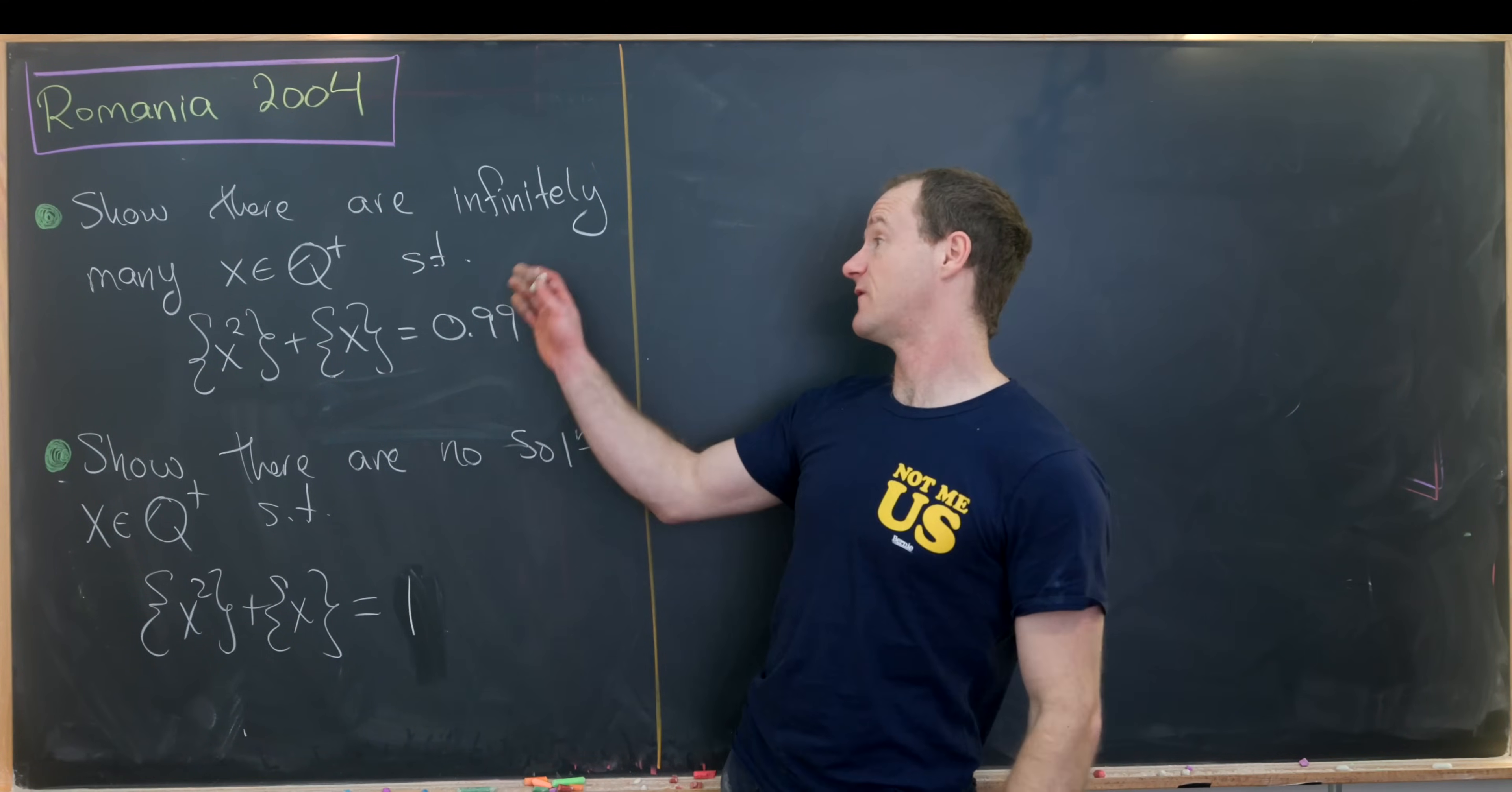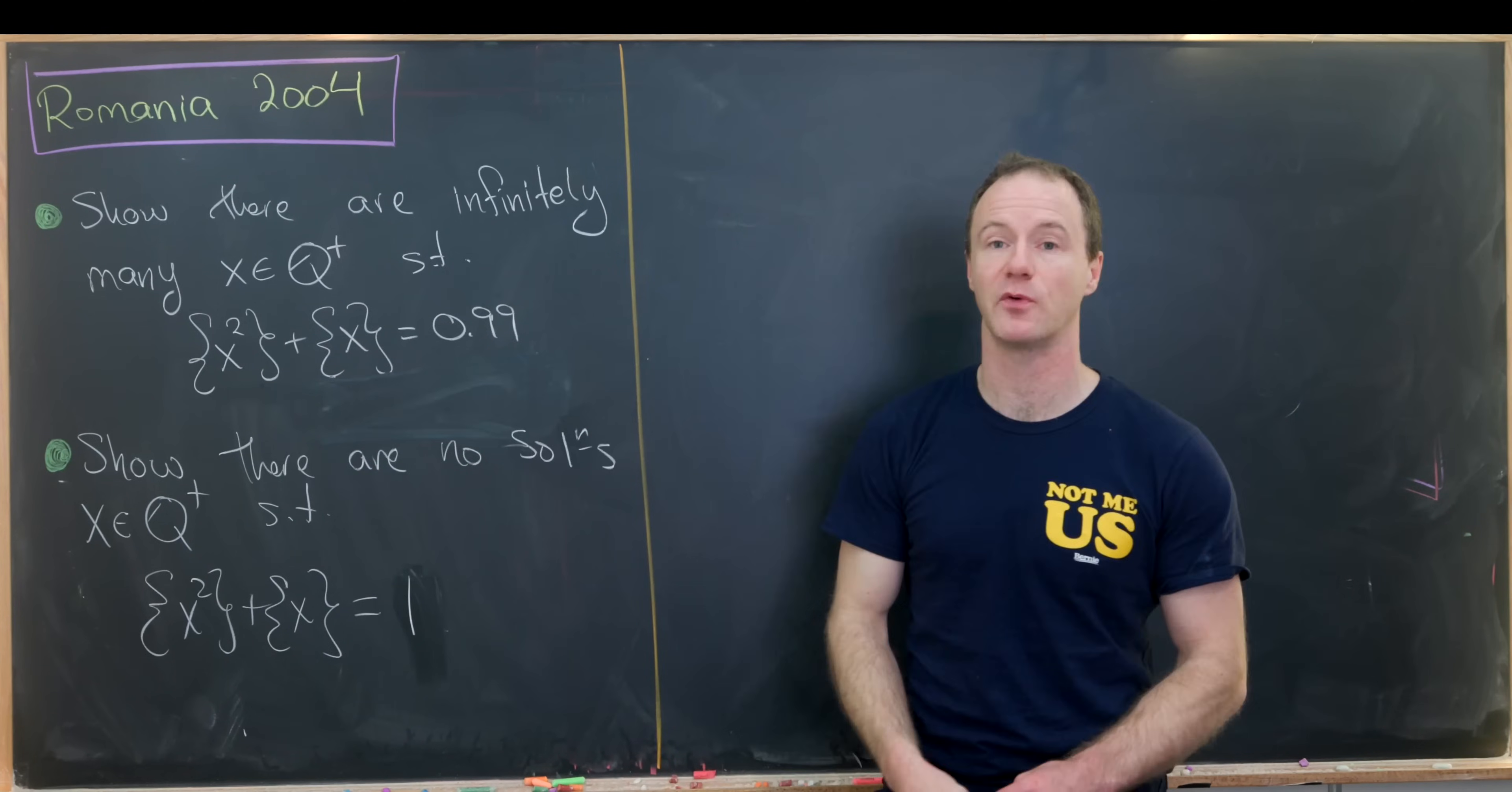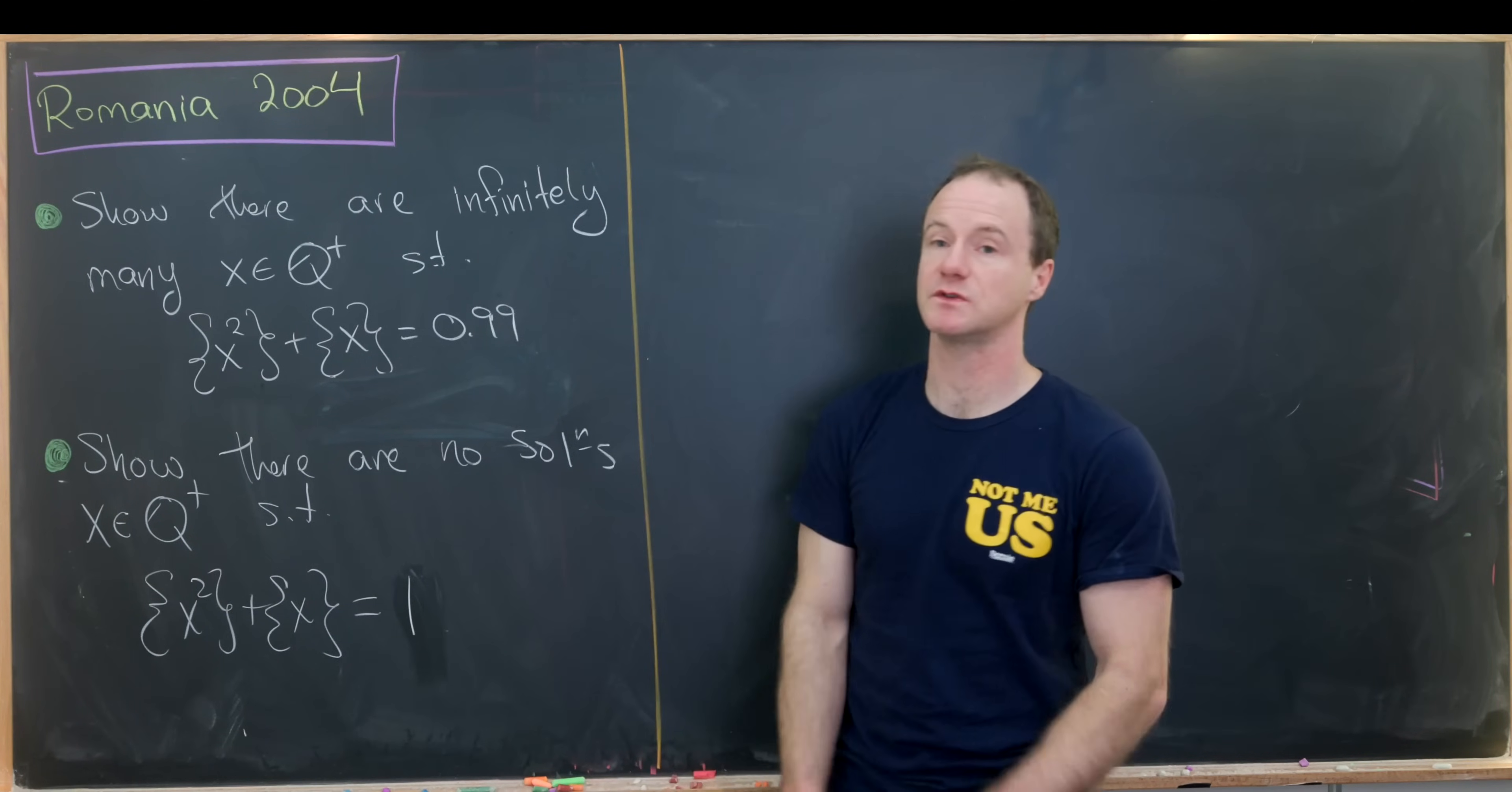The first equation is to show that there are infinitely many positive rational numbers x such that the fractional part of x squared plus the fractional part of x is 0.99. Whereas the second one is to show that there are no positive rational solutions to fractional part x squared plus fractional part x equals 1.